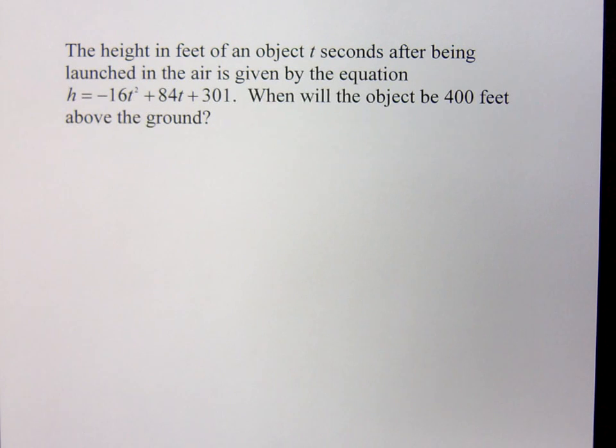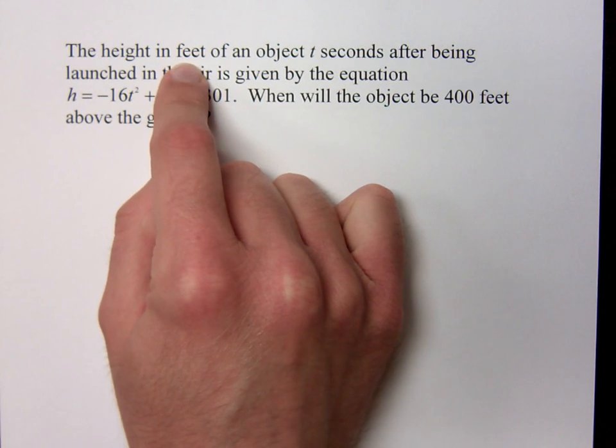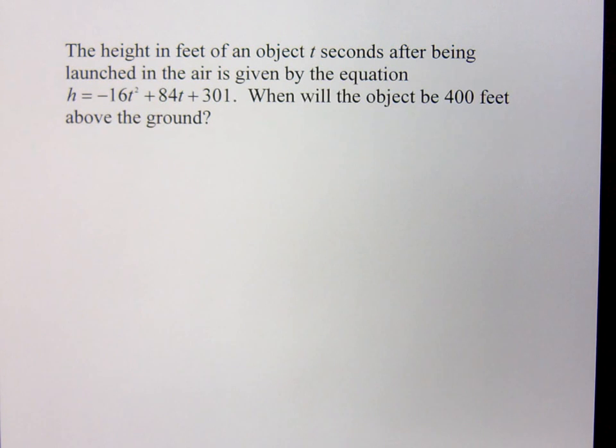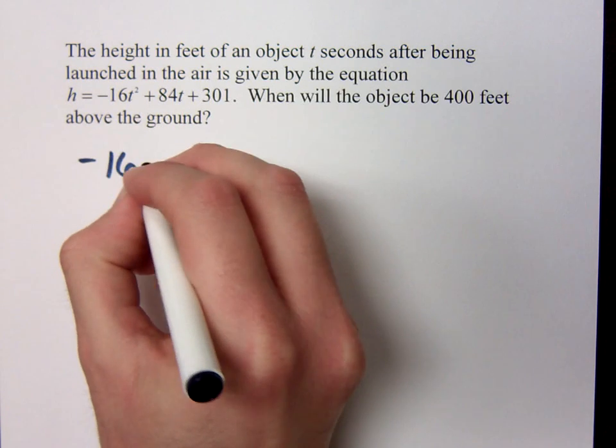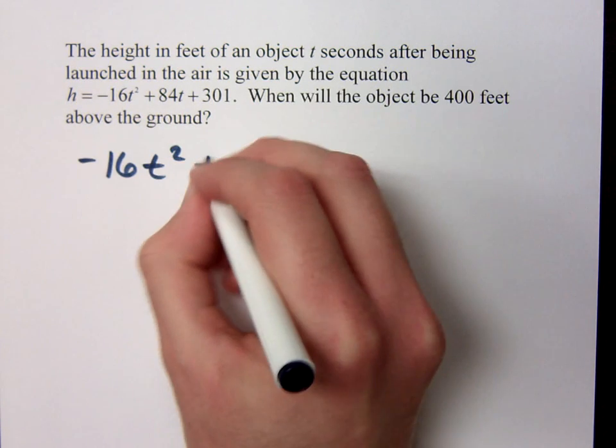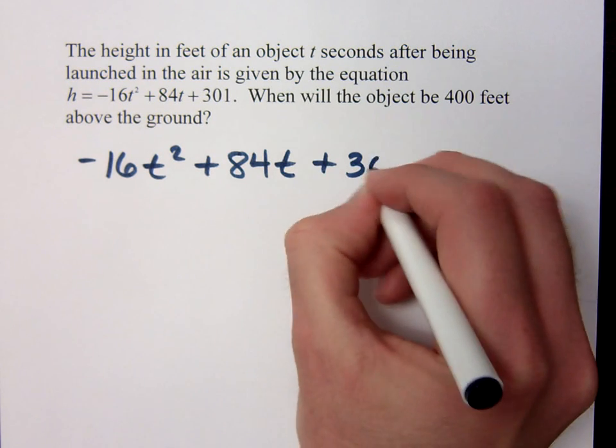All right, in this word problem, we want to examine what happens whenever an object is launched into the air. The height is measured in feet, and we're measuring it however many seconds after it's been launched. So it's given by this formula. Let me just write this a little bit larger for you. So that's -16t² + 84t + 301.